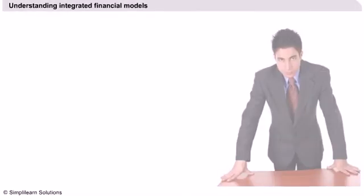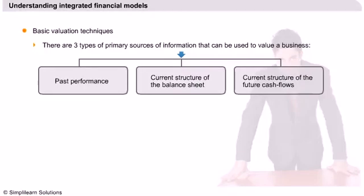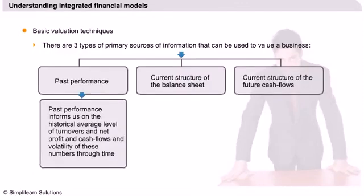We will start our presentation with a discussion on basic valuation techniques. There are three types of primary sources that we can use when trying to give a value to a business. The first source is past financial performance — for example, revenues from sales in recent years, the level of profit when related to sales, and the capacity to service debt interest.